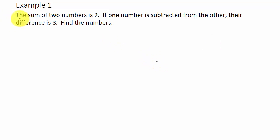So let's look at this. We want to find the sum of two numbers is two. If one of the numbers is subtracted from the other, their difference is eight. Find the numbers. Alright, so let's do this. Let's say x is equal to, let's just call it one number, just like they do in the problem, is one number, and we'll call y the other number.